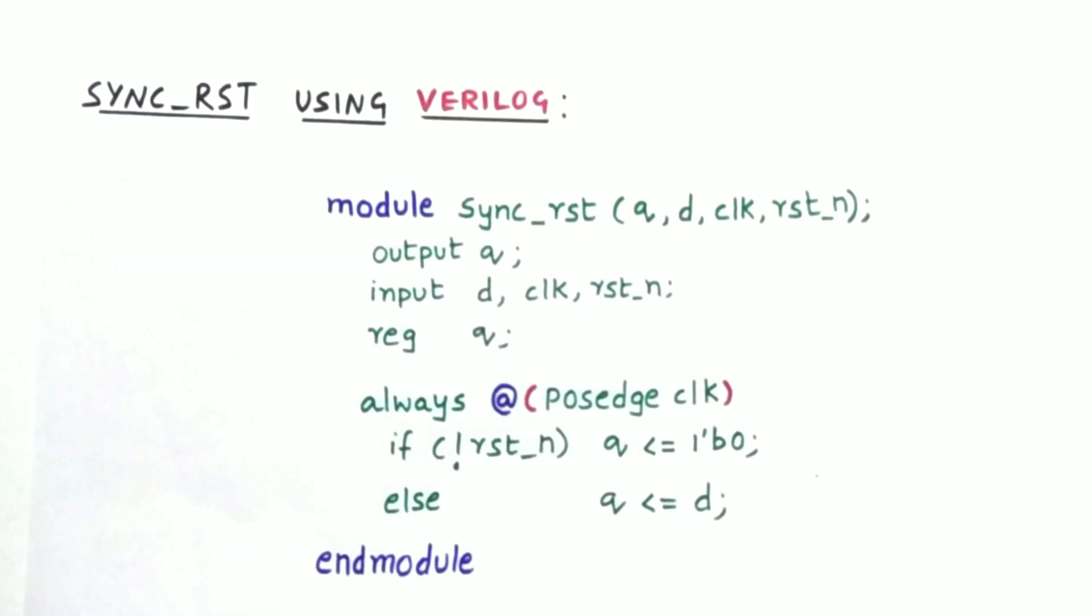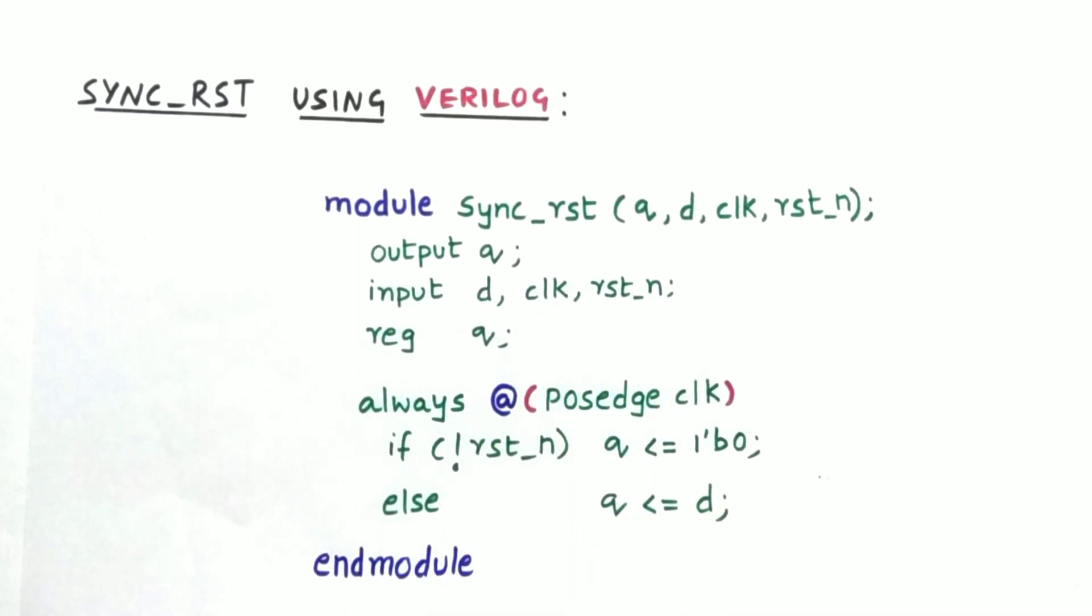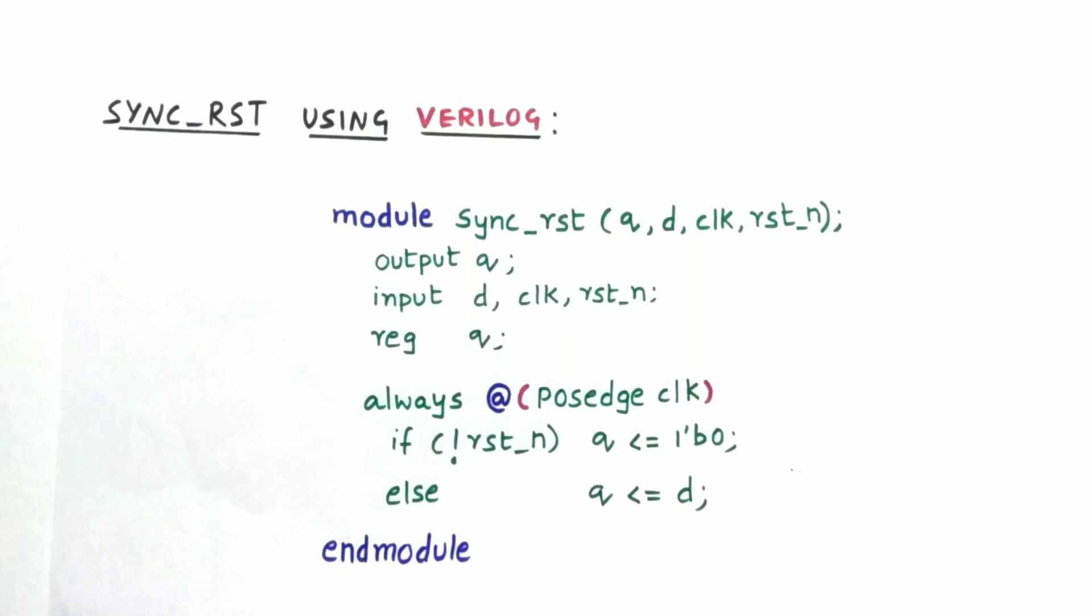So this is synchronous reset using Verilog. We have a module which has output Q, input as D, clock and reset. And in the sensitivity list of the always block, we have positive edge of clock. There is no mention of reset. So at the positive edge of clock, if the reset is zero then only we can make the output as zero, otherwise it will be same as the input.